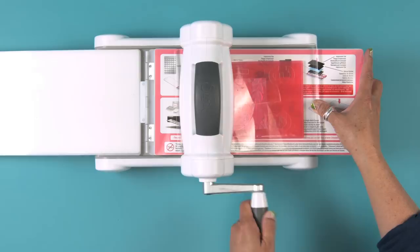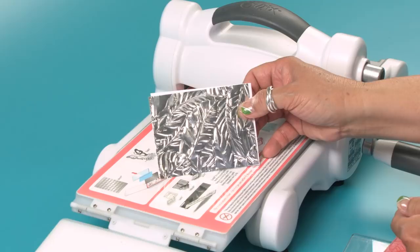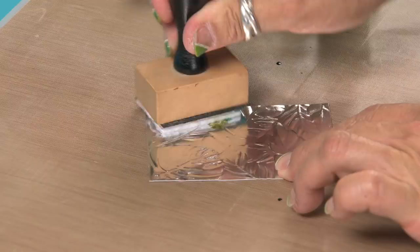Trim this to two and a half inches by three and a half inches. Apply various shades of green alcohol ink to the embossed foil adhesive sheet. Adhere slightly to the left of the white cardstock as shown.